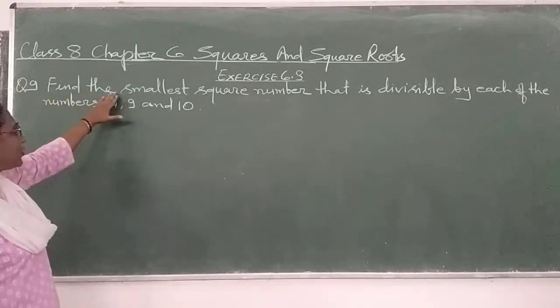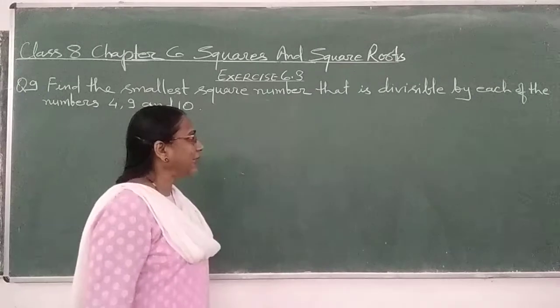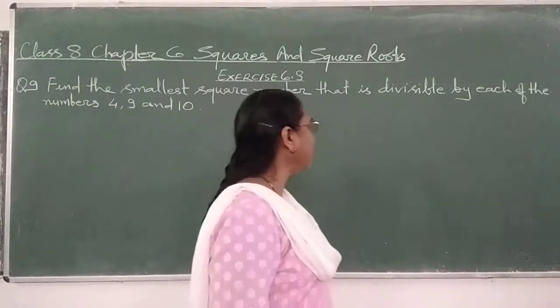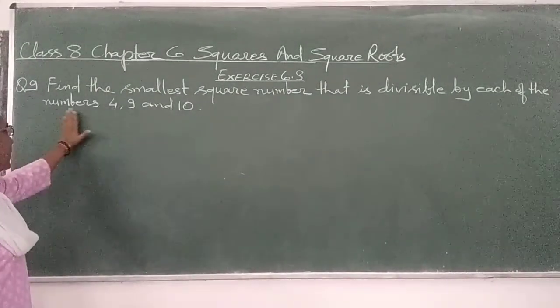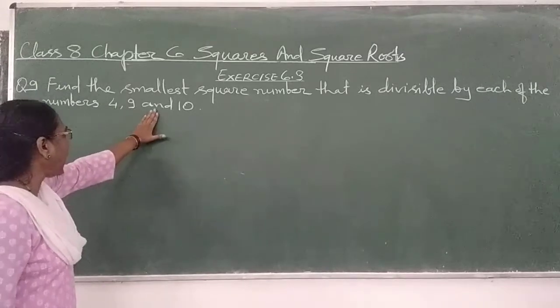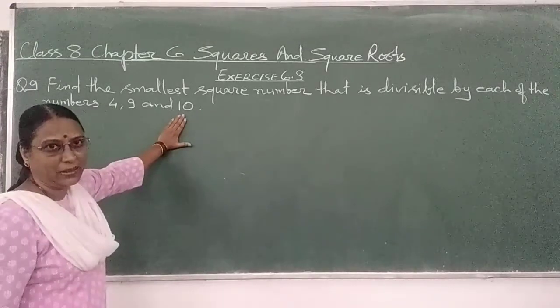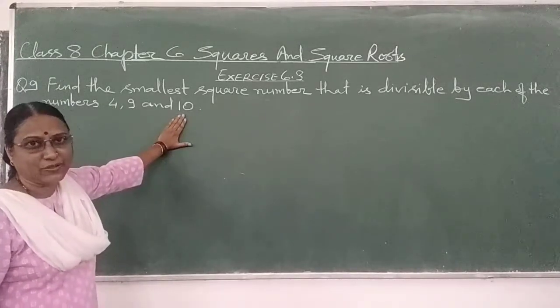Find the smallest square number that is divisible by each of the numbers 4, 9 and 10. What is this question?